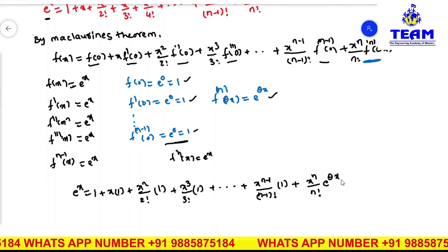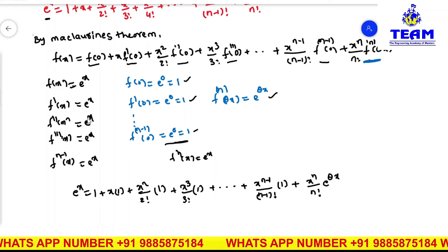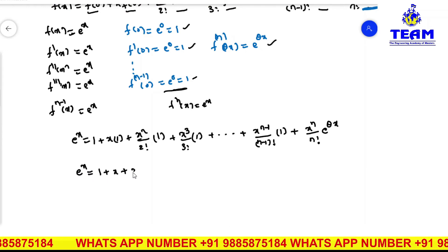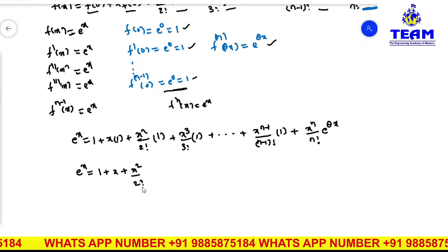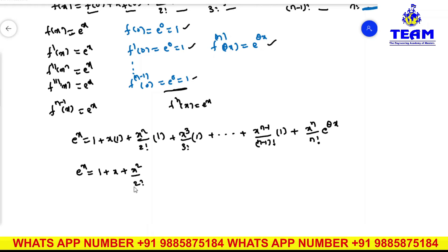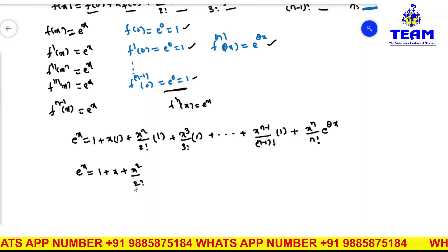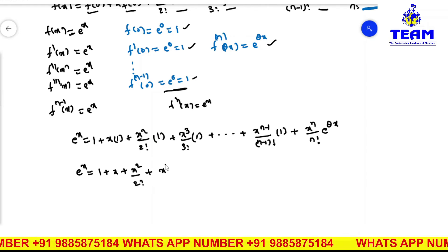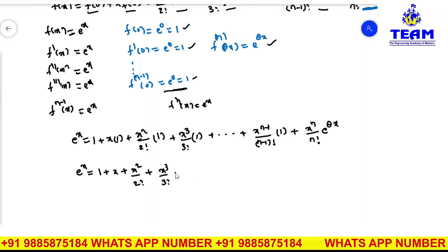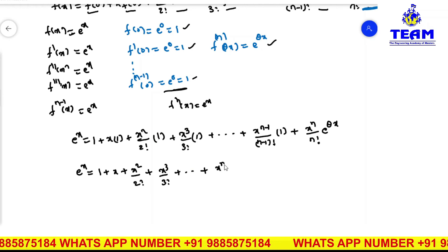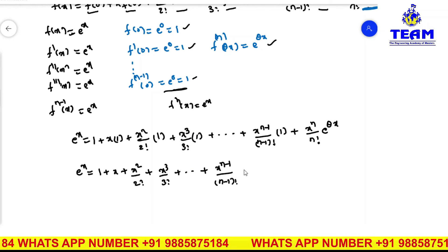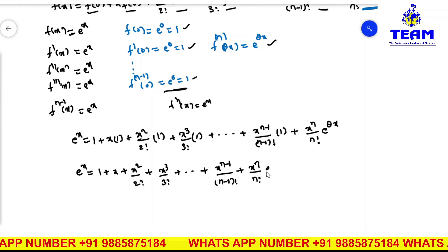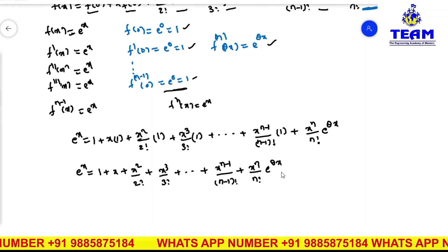So e^x = 1 + x + x²/2! + x³/3! + ... + x^(n-1)/(n-1)! + (x^n/n!) · e^(θx). Note: we write 2!, 3!, 4! and do not simplify the factorial terms. This is exactly what we had to prove.